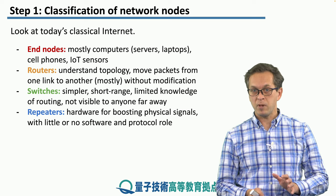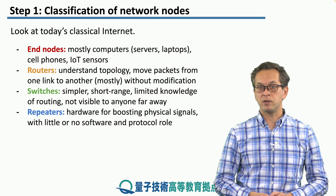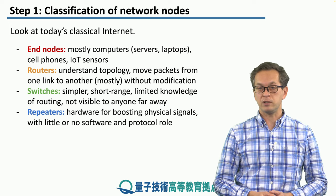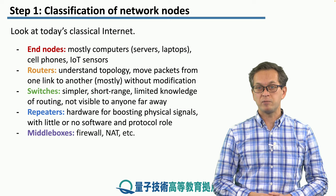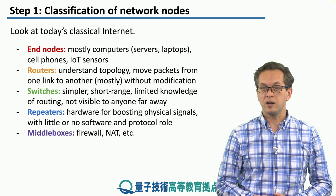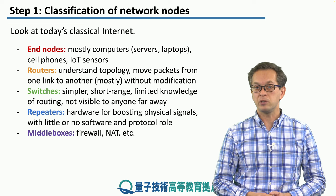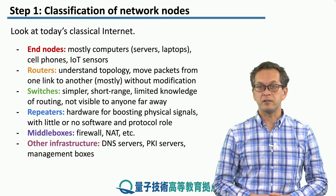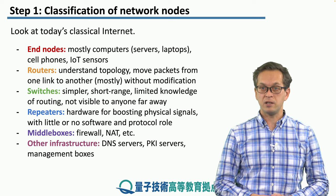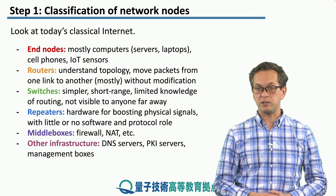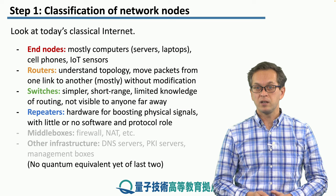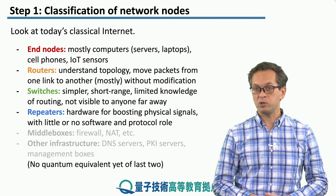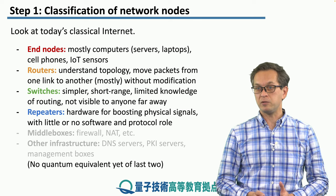These are the main types of nodes we have talked about and will also discuss in the rest of the lesson. Further types of nodes for the classical internet are middle boxes — for example, firewalls, NAT or network address translation boxes — and other infrastructure nodes such as DNS servers, PKI servers, and management boxes. These last two, middle boxes and other infrastructure nodes, don't really have a quantum equivalent yet, but they might in the future.